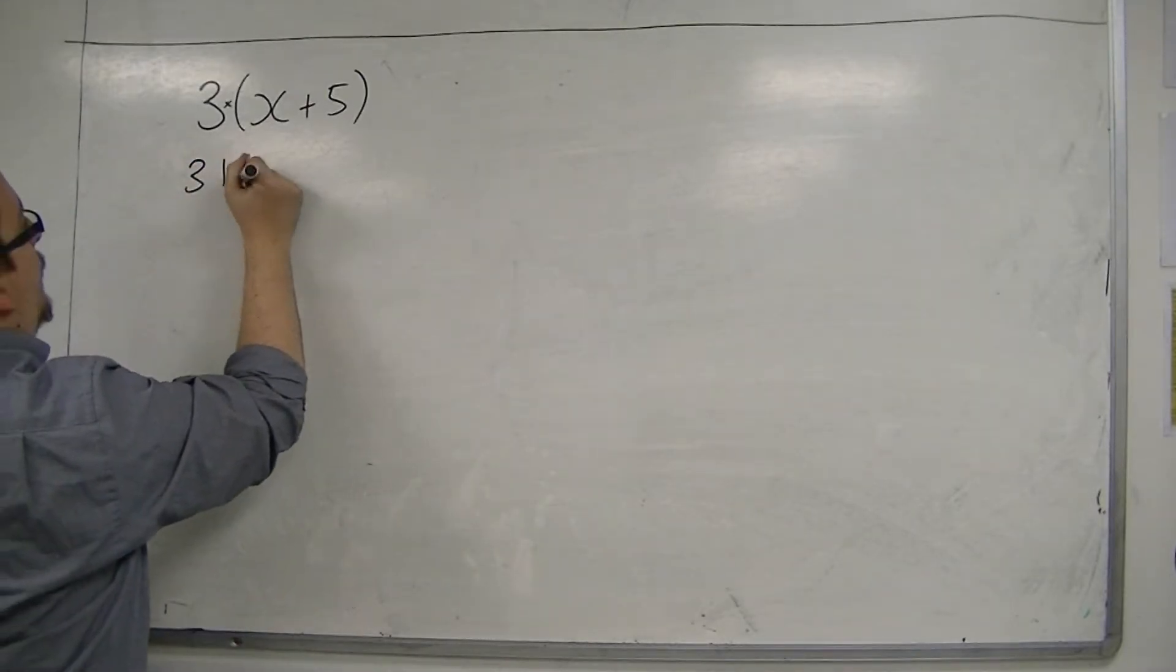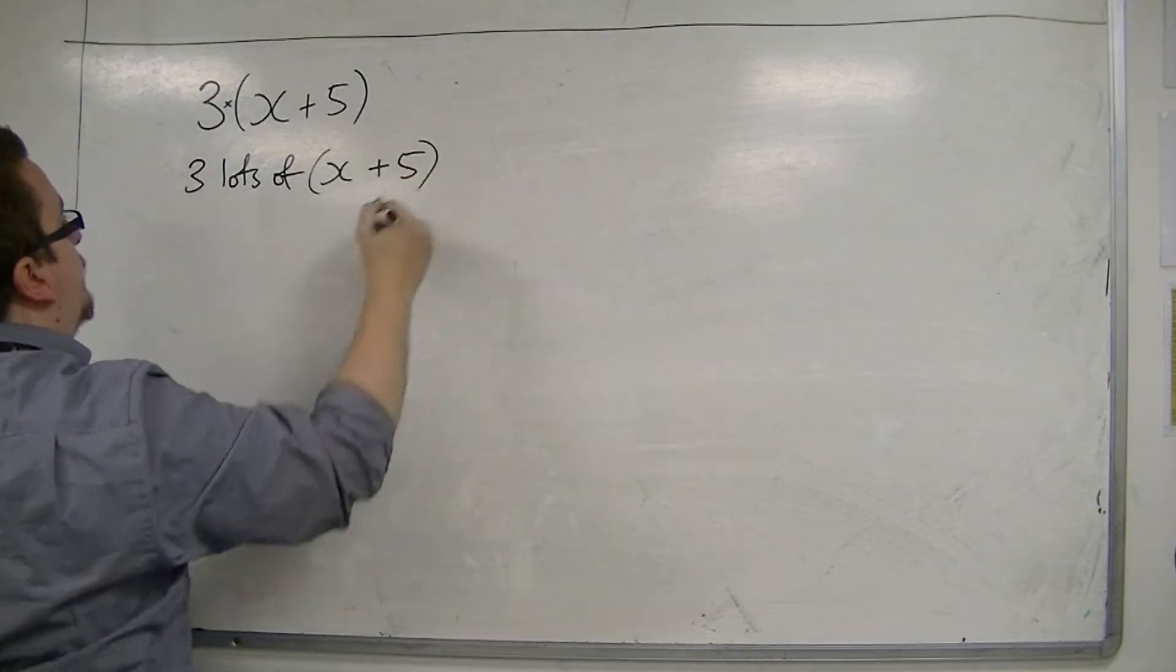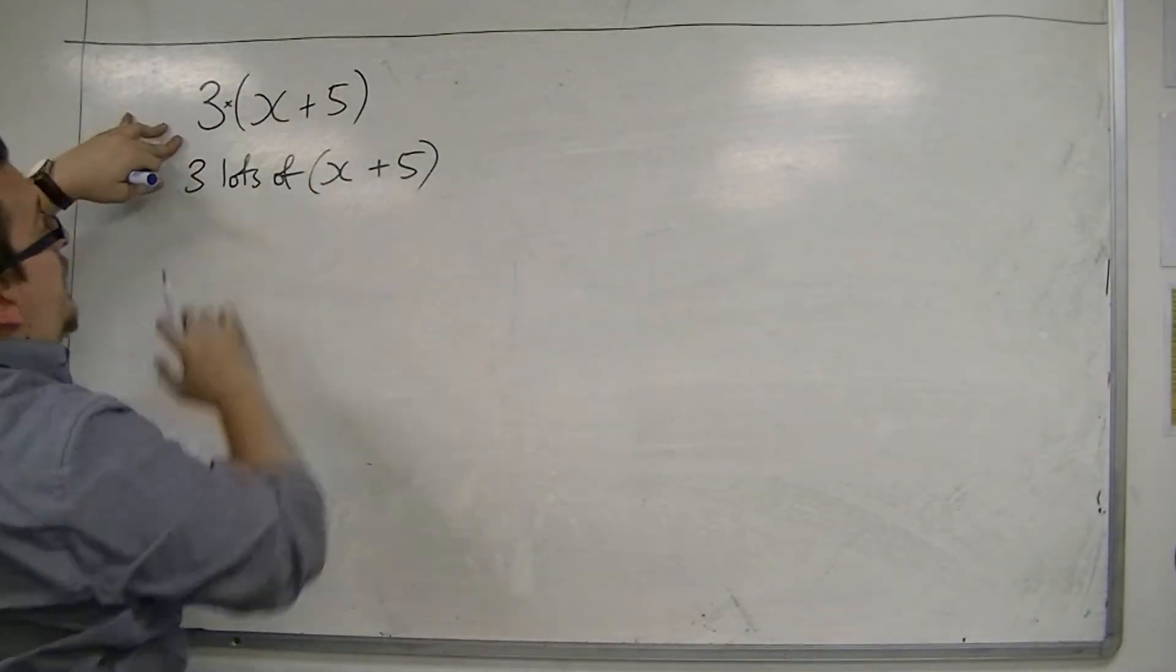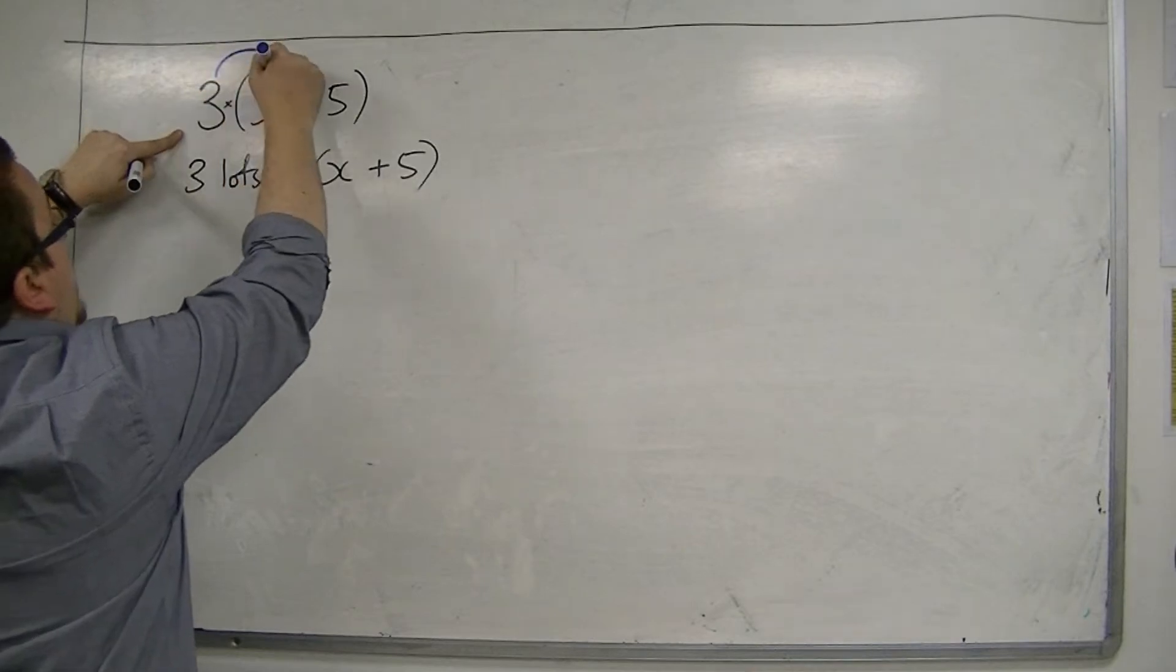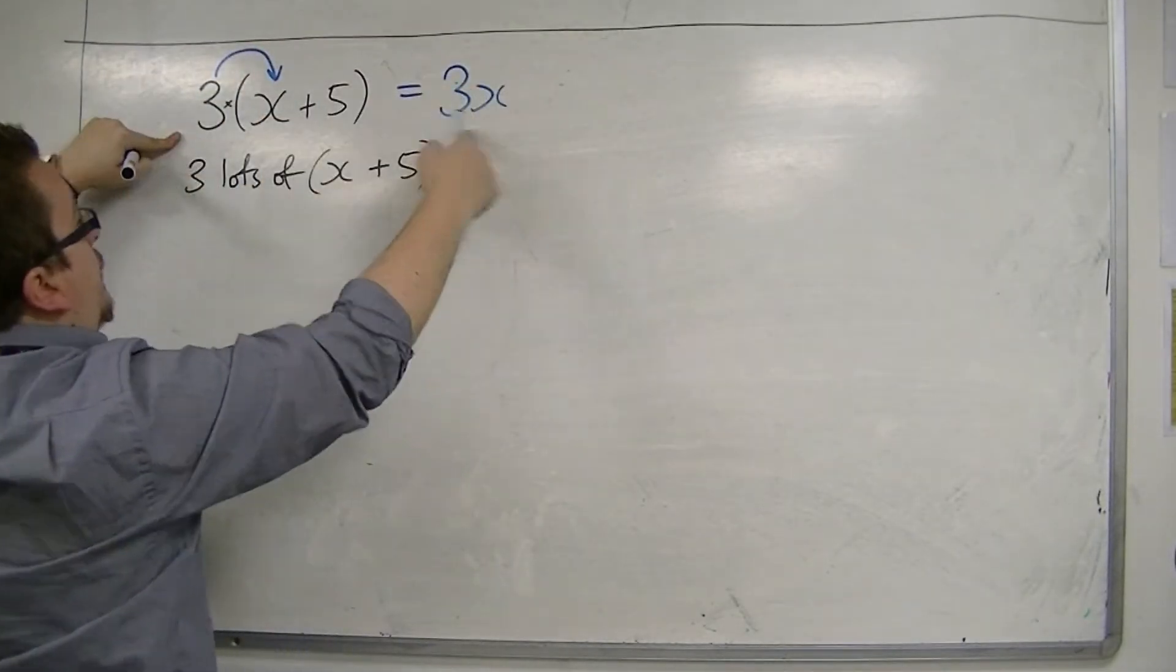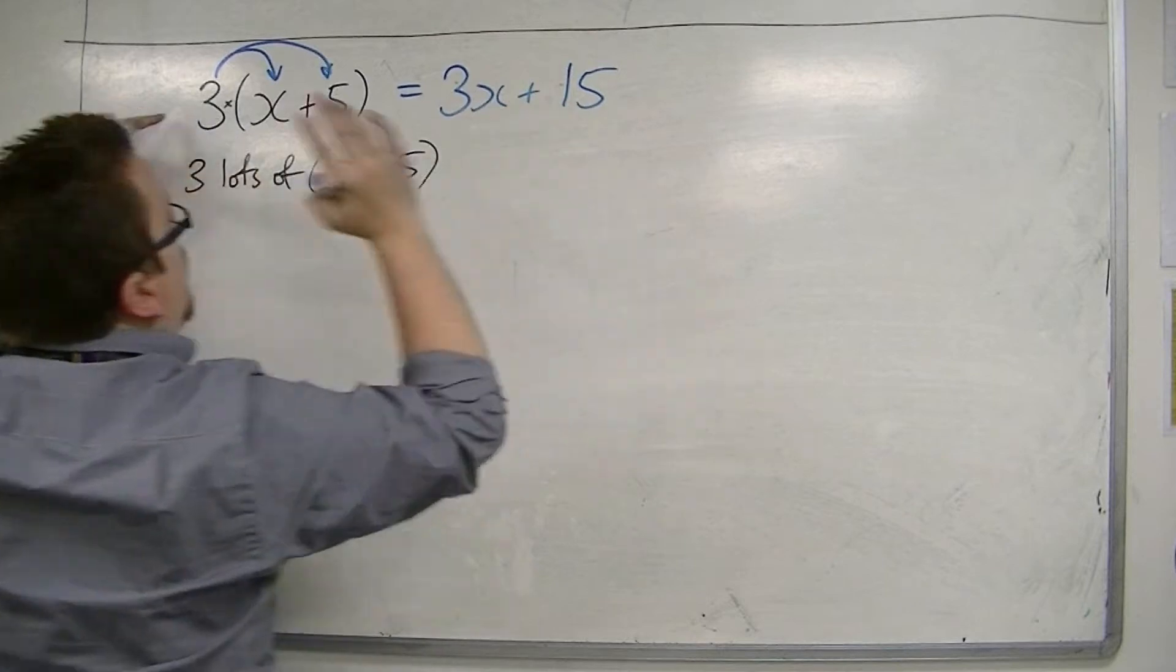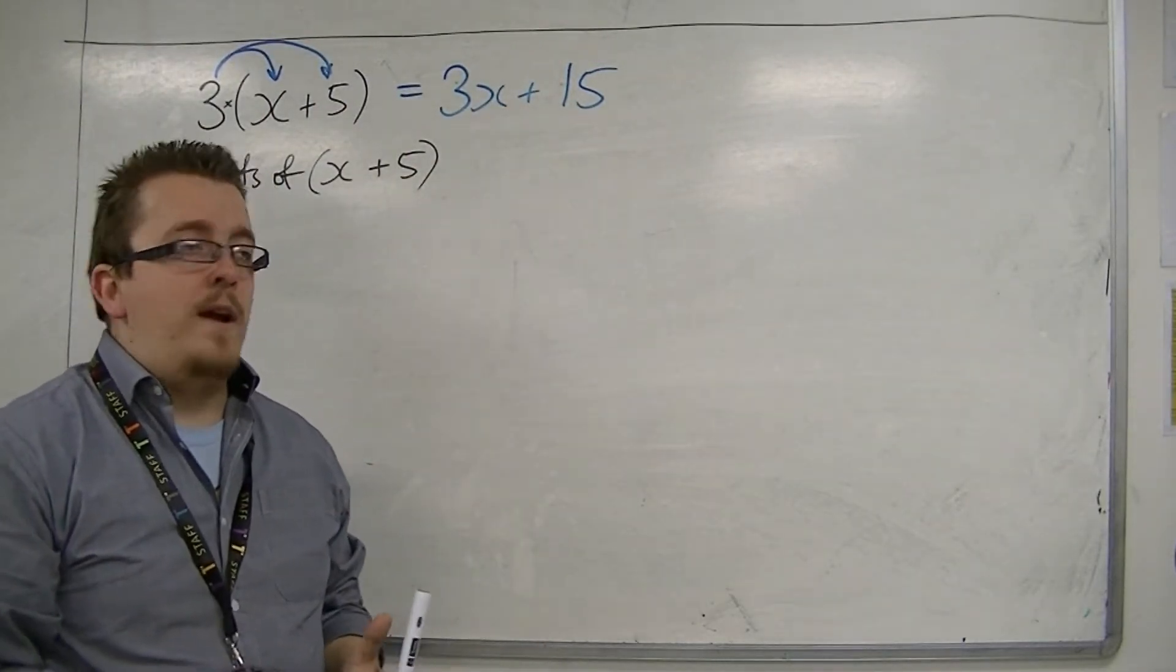So 3 lots of x plus 5. And so what we need to do is we need to multiply 3 by whatever is inside the bracket. So we've got to multiply the 3 by the x. So that would be 3x. 3 lots of x is 3x. And then multiply the 3 by the 5, which would be 15. So 3x plus 15 is the expanded form of that bracket.